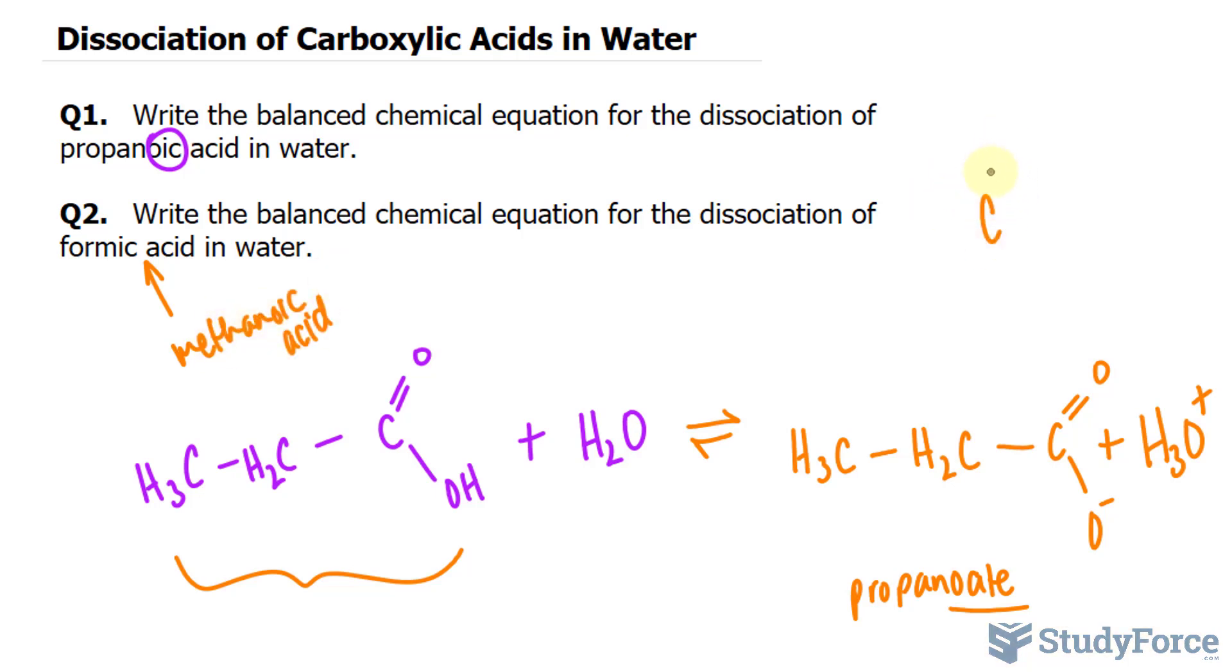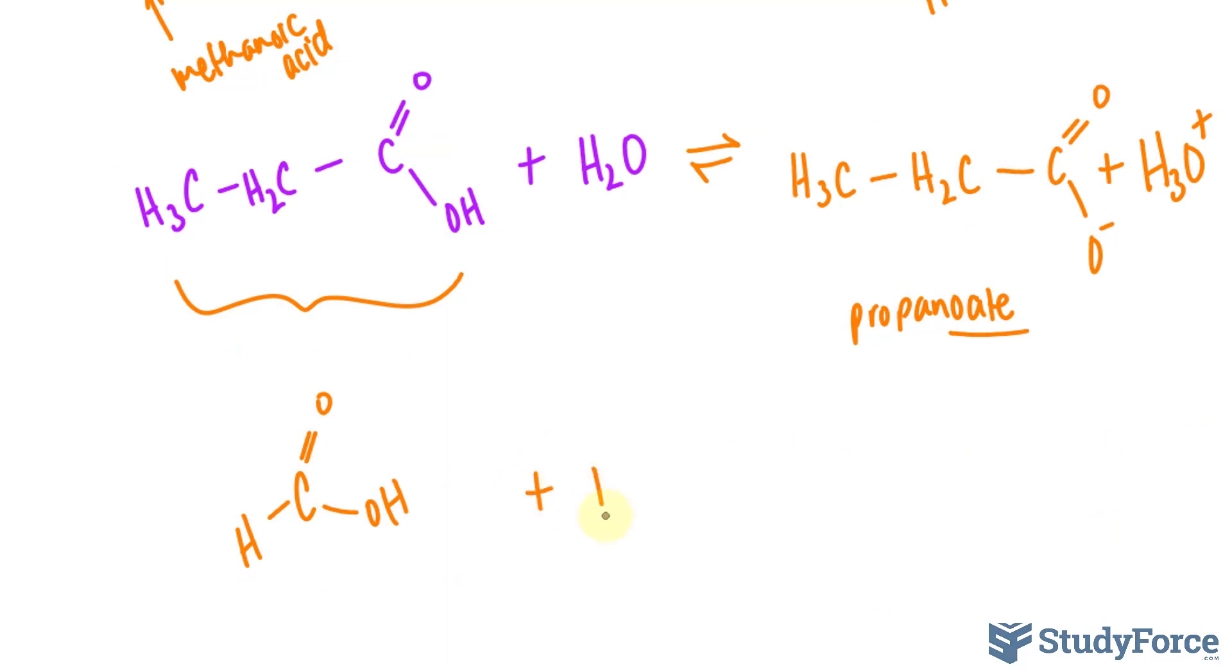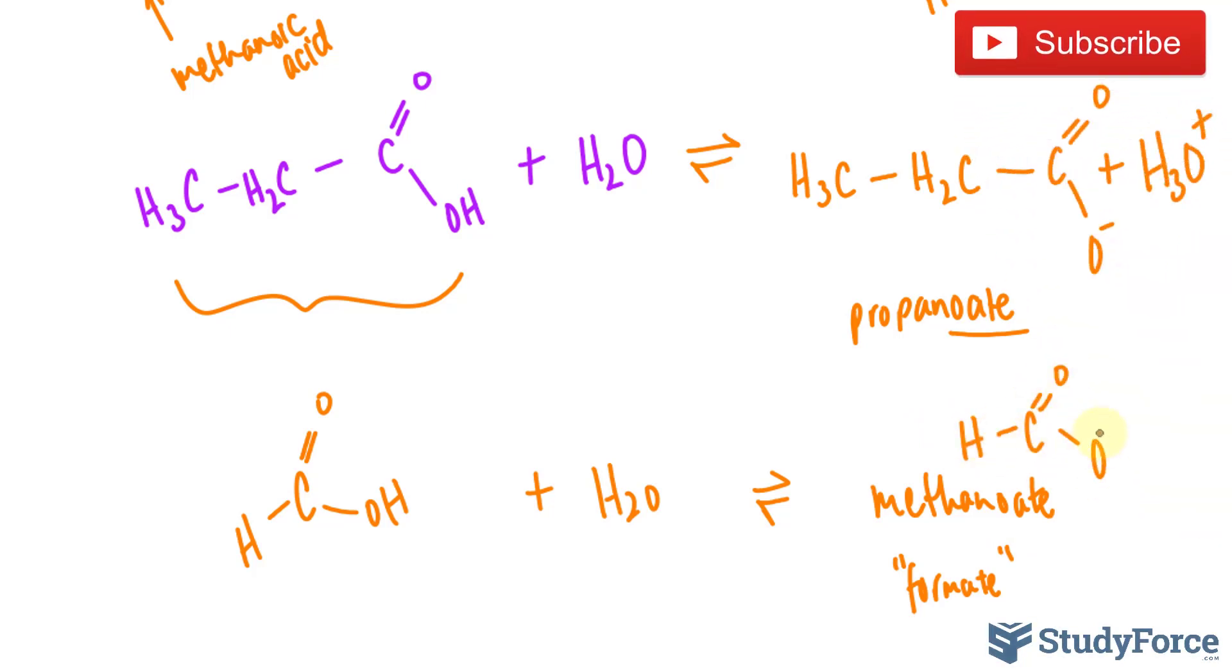So we have carbon double bonded to oxygen, OH, and hydrogen. This molecule plus H2O forms methanoate, or formate if you like. And that looks like this, where you have the same thing except one less hydrogen and a hydronium ion.